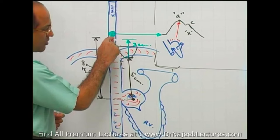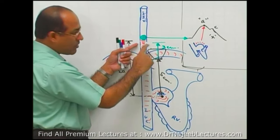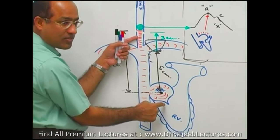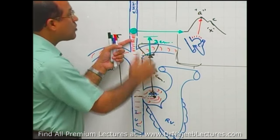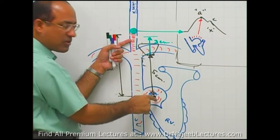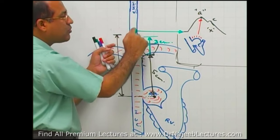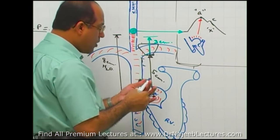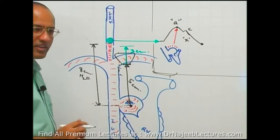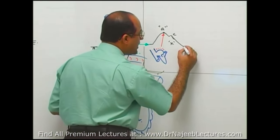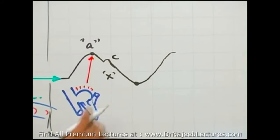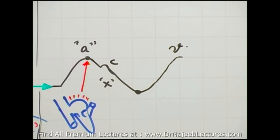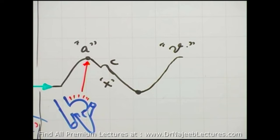Once the column has come down and the atrium is completely relaxed, it cannot relax further. Now whatever more blood is coming back cannot be accommodated, so blood again starts accumulating and this ball starts moving up. At this particular point, the atria has been filled and completely relaxed, and further venous return is leading to increased pressure in the jugular venous system. This is called the V wave - due to accumulation of venous return in the right atrium and jugular system.